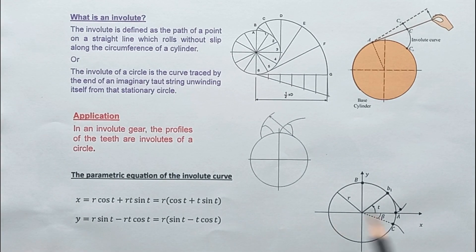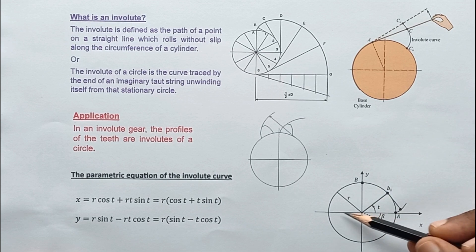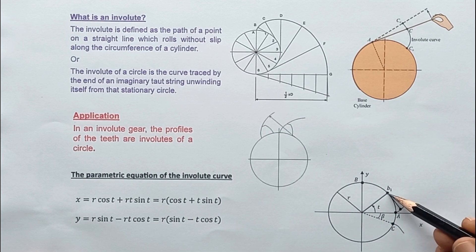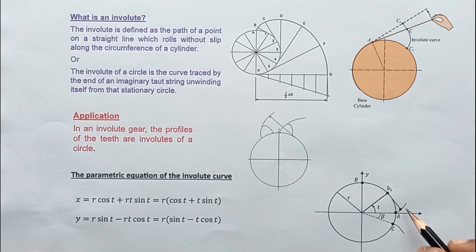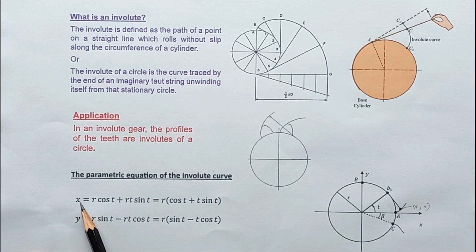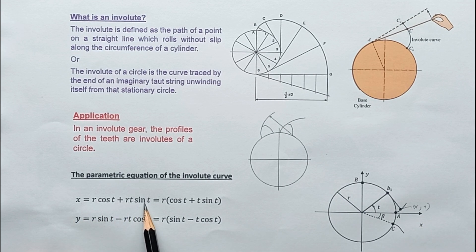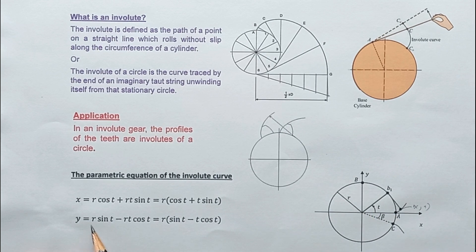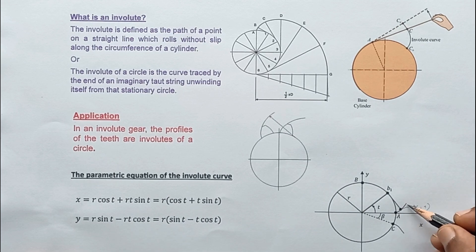This is the parametric equation of the involute curve. Using a rectangular coordinate system, for a point with coordinates (x, y), the x coordinate is equal to r·cos(t) + r·t·sin(t), where t is the angle and r is the radius. The y coordinate is r·sin(t) − r·t·cos(t). In this video we are mainly focusing on how to construct this involute using geometric constructions.